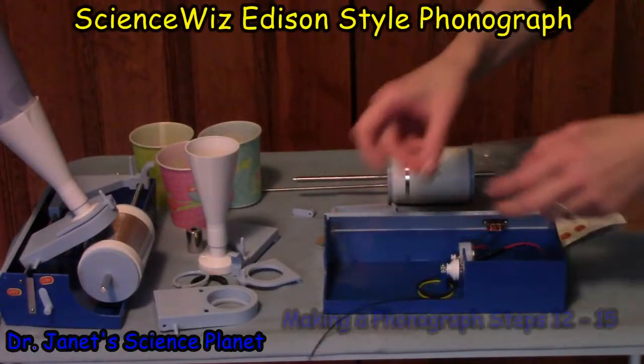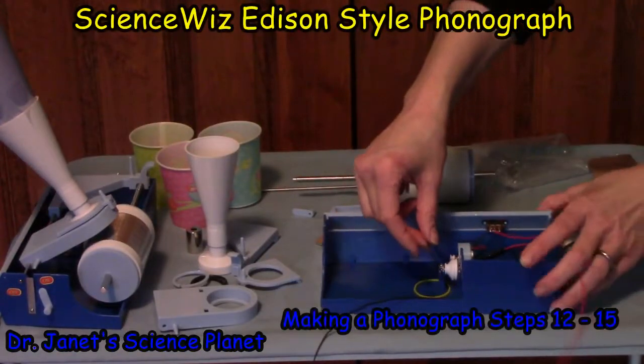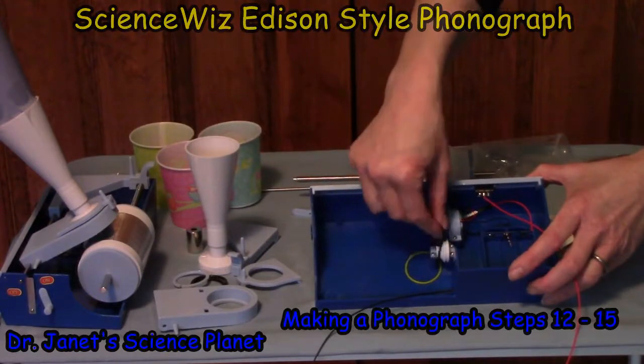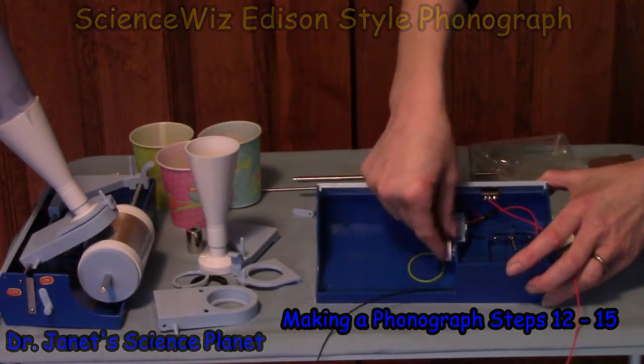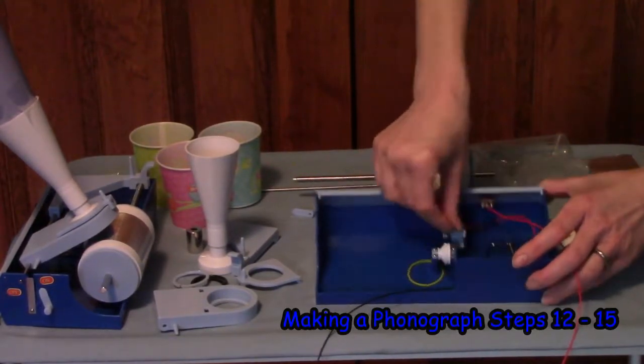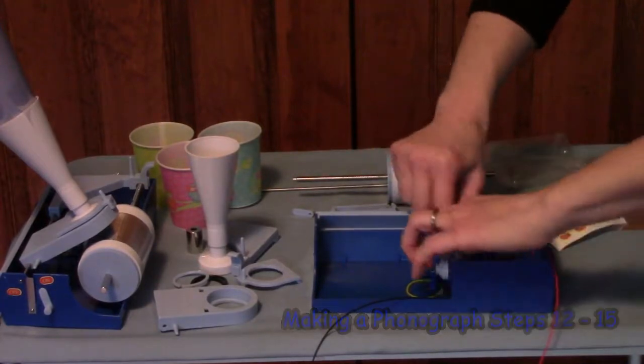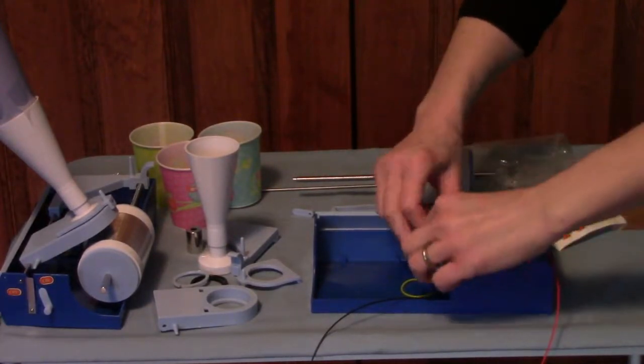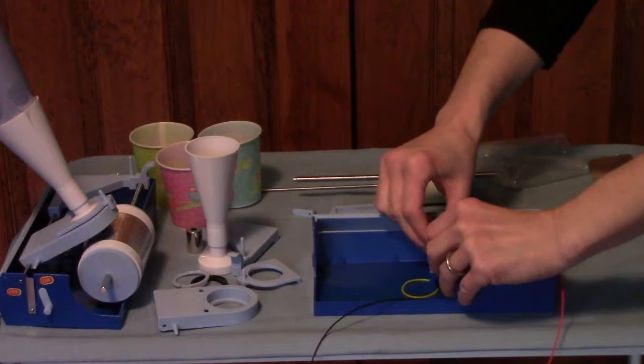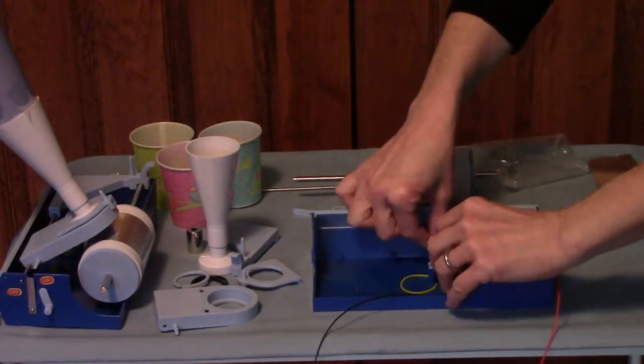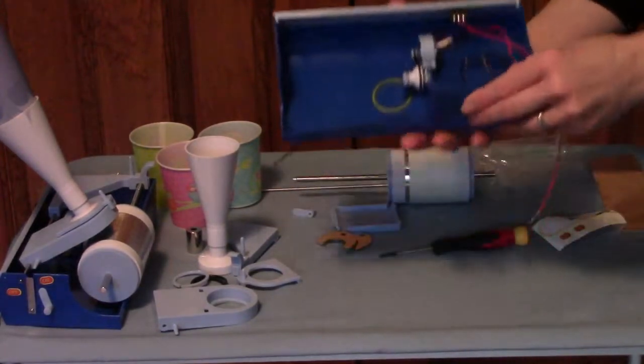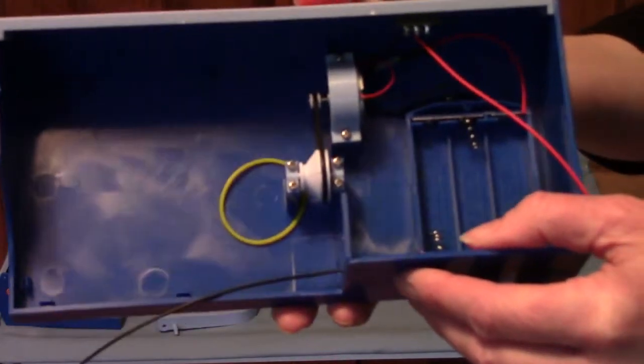We're going to go ahead and take the black belt here, put it around the big pulley part. So remember you've got to put around the big pulley here, and then it goes around the little pulley of the motor like that.